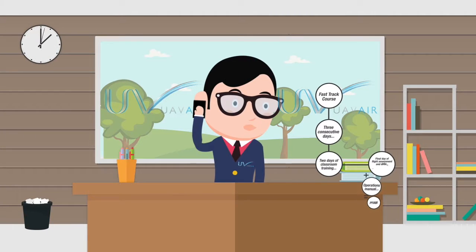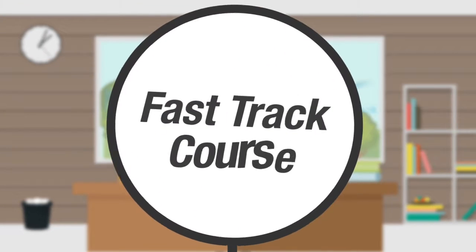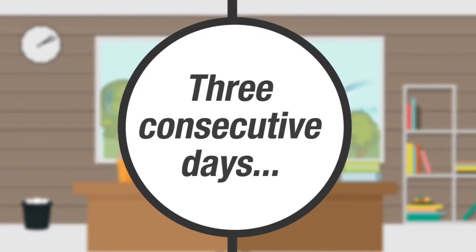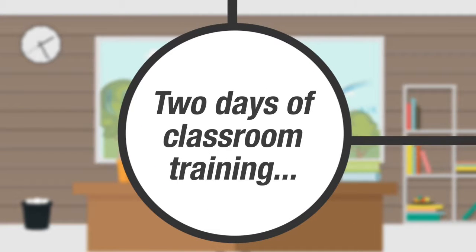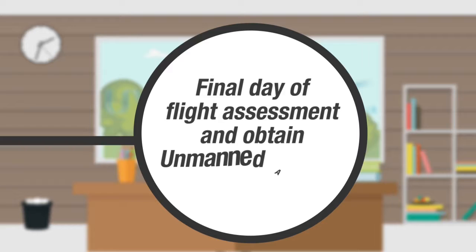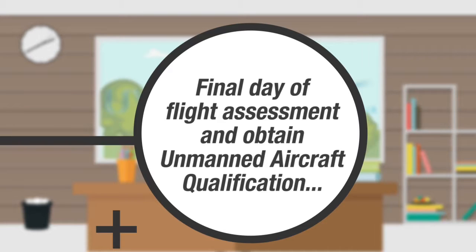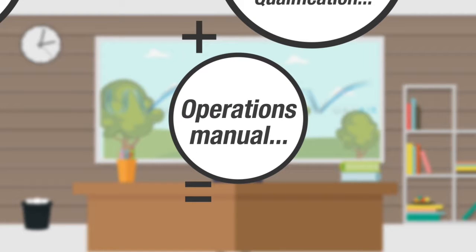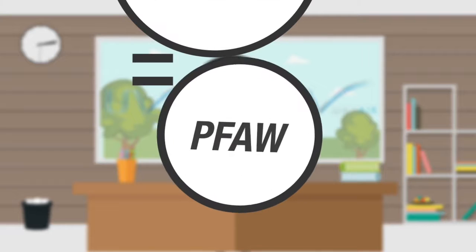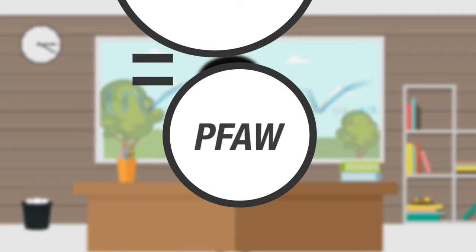The first option is the fast track course. This includes everything required to gain a UAQ in just three consecutive days, with two days of classroom training followed by a final day of flight assessment. Before the course begins, the student is sent distance learning materials to help prepare. After the course, he or she writes a company operations manual and can then apply for a permission for aerial work, or PFAW, for their business. They are now legally allowed to fly.